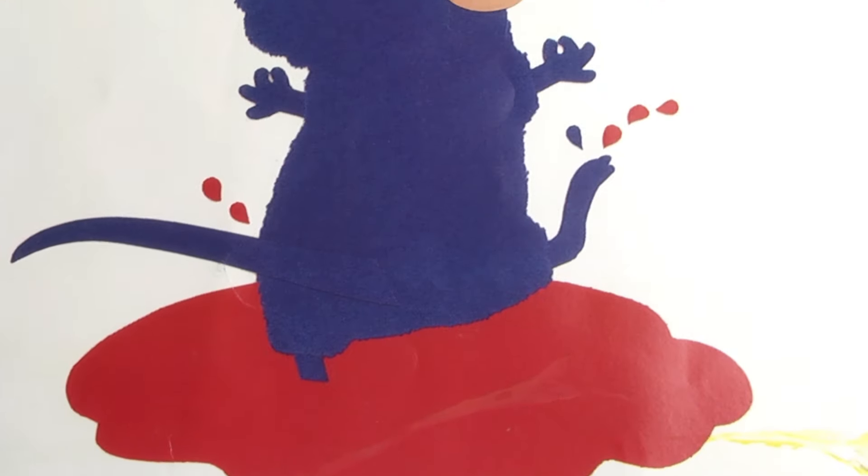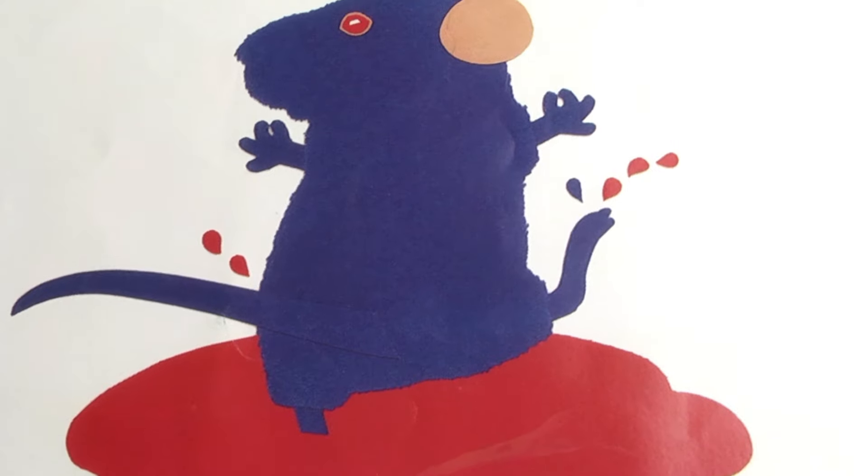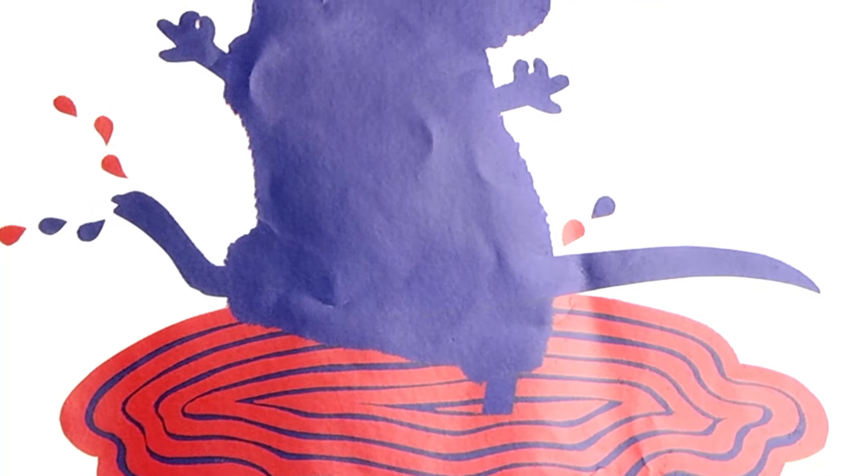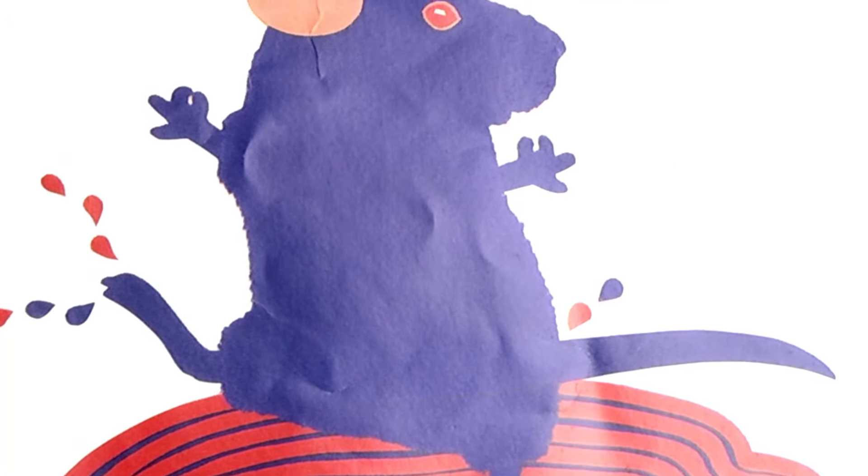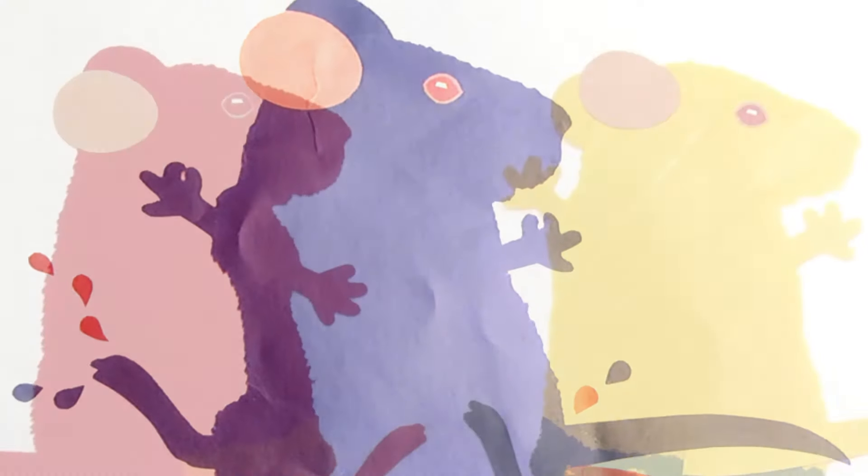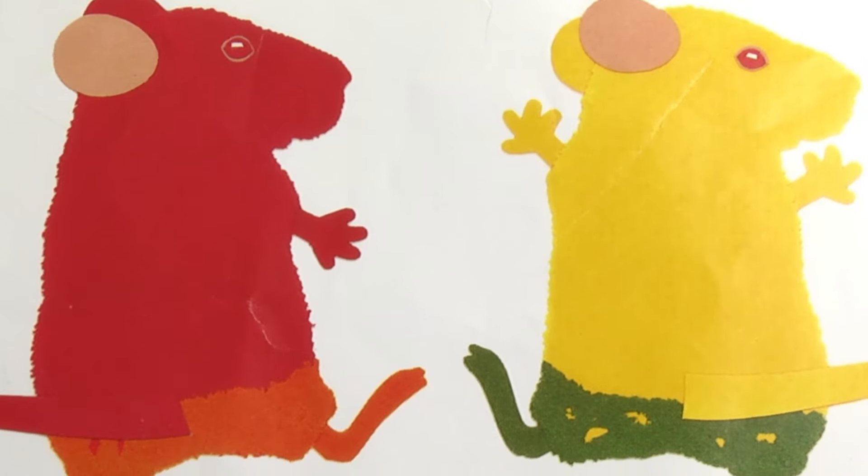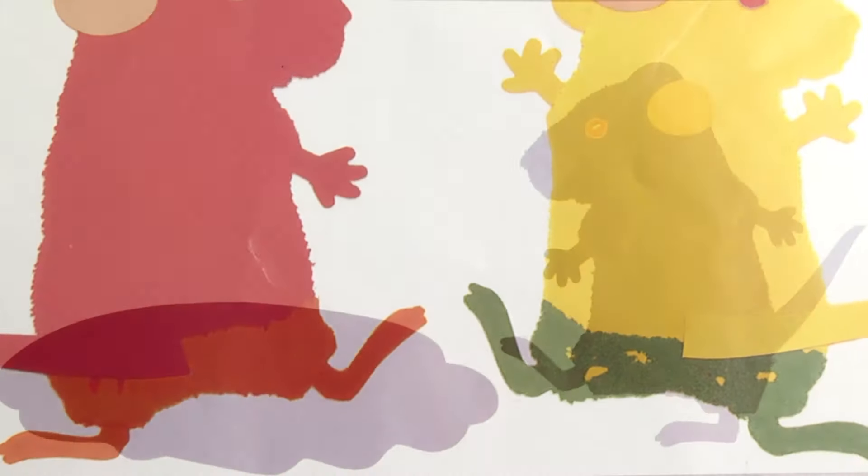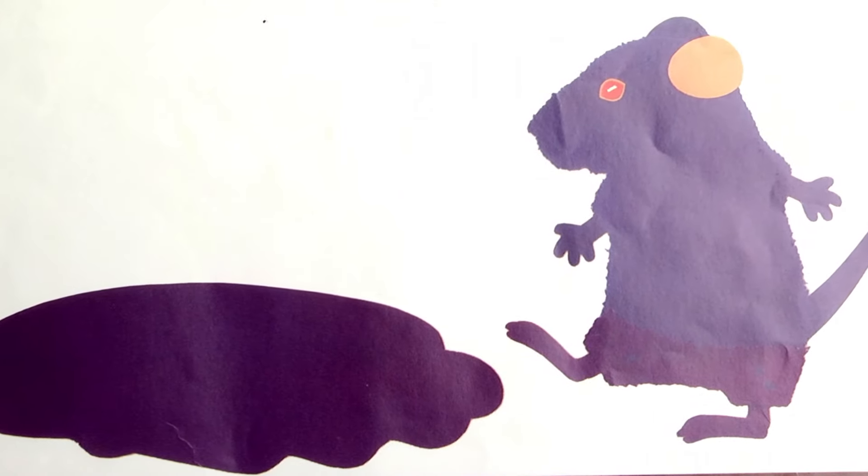Then, the blue mouse jumped into a red puddle. He splashed and mixed and danced until... Purple! they all shouted. Blue feet in a red puddle make purple.